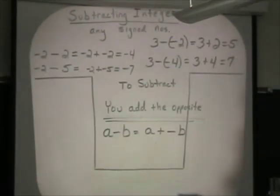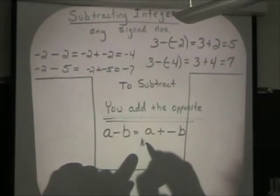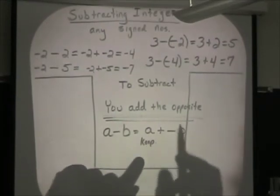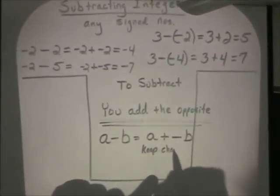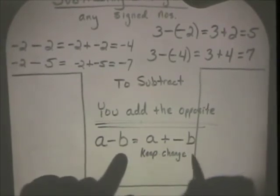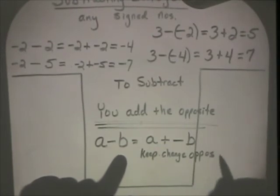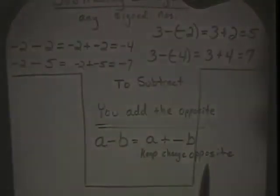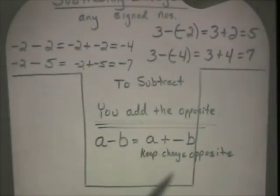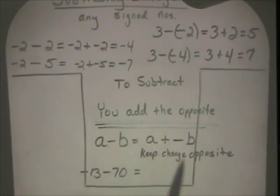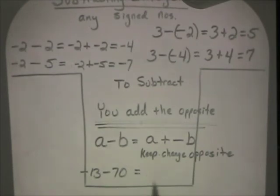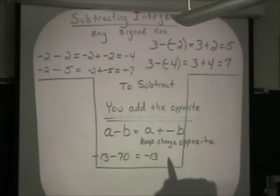Some math teachers like to teach it this way: keep the first number, change the subtraction to addition, then take the opposite of the number being subtracted — they call it 'keep, change, opposite.' For example, negative 13 subtract positive 70: keep negative 13, change to addition, opposite of 70 is negative 70. So negative 13 plus negative 70 equals negative 83.